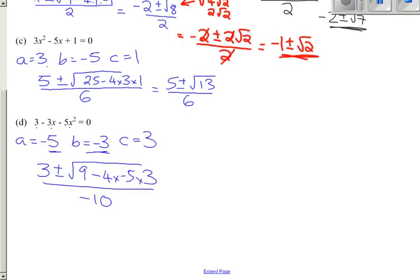2 of these is minus 10. So that's 3, plus or minus the square root of, this works out to be what that's, that's 20, isn't it? That's 60, so I've got 60, 69 in total, 69 all divided by minus 10.